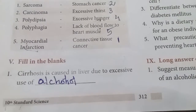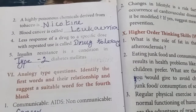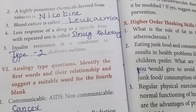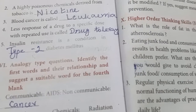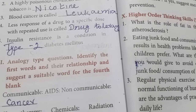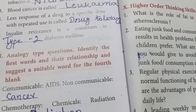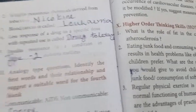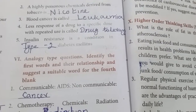Fill in the blanks: Cirrhosis is caused in the liver due to excessive use of alcohol. A highly poisonous chemical derived from tobacco is nicotine. Blood cancer is called leukemia. Less response of a drug to a specific dose with repeated use is called drug tolerance. Insulin resistance is a condition in Type 2 diabetes mellitus. Blood cancer (leukemia) occurs when WBCs increase in number.